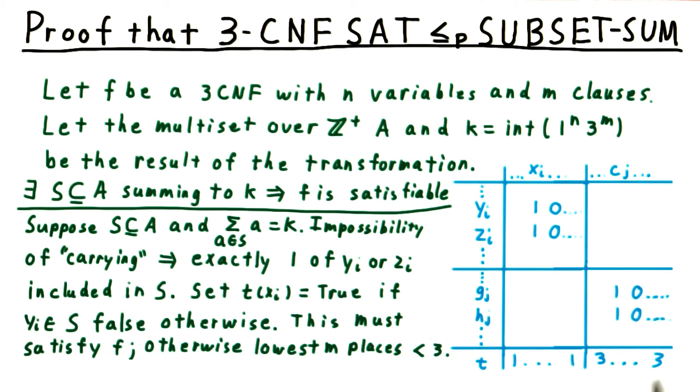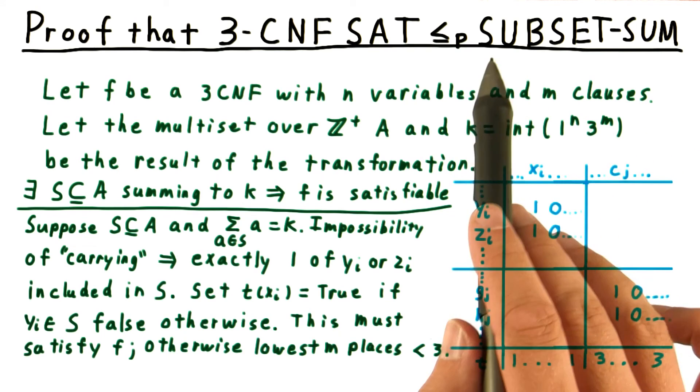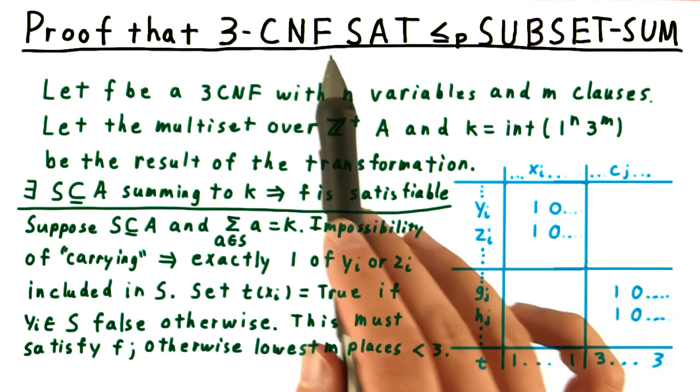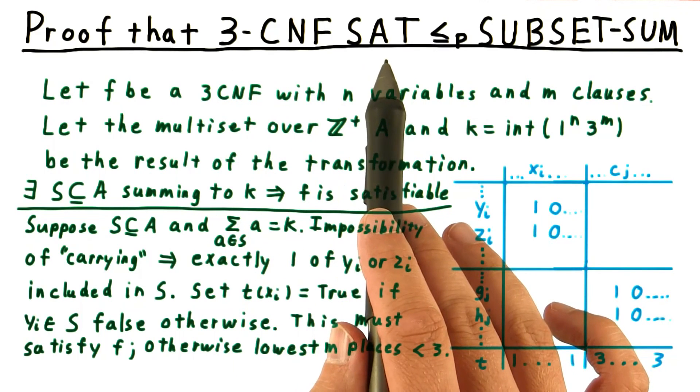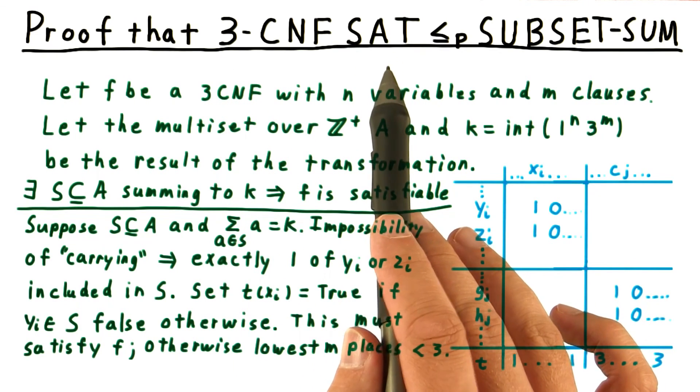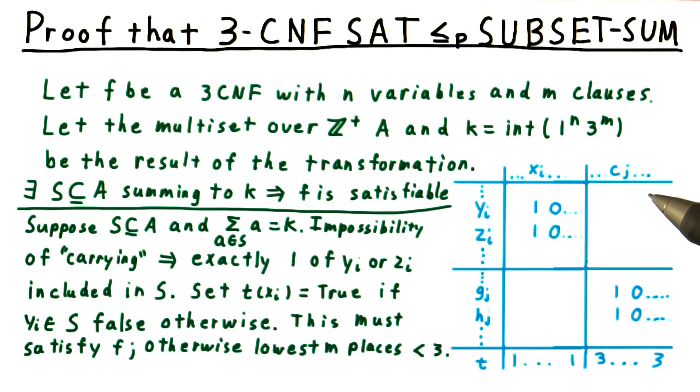This must satisfy every clause. Otherwise, there would be no way that the total in the clause places could be 3. Altogether, we've seen that subset sum is in NP, and we can reduce 3CNFSAT, an NP-complete problem, to it. So subset sum must be NP-complete.